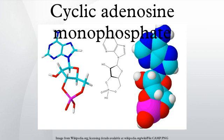Role of cAMP in eukaryotic cells. cAMP and its associated kinases function in several biochemical processes, including the regulation of glycogen, sugar, and lipid metabolism. In eukaryotes, cyclic AMP works by activating protein kinase A. PKA is normally inactive as a tetrameric holoenzyme, consisting of two catalytic and two regulatory units, with the regulatory units blocking the catalytic centers of the catalytic units.